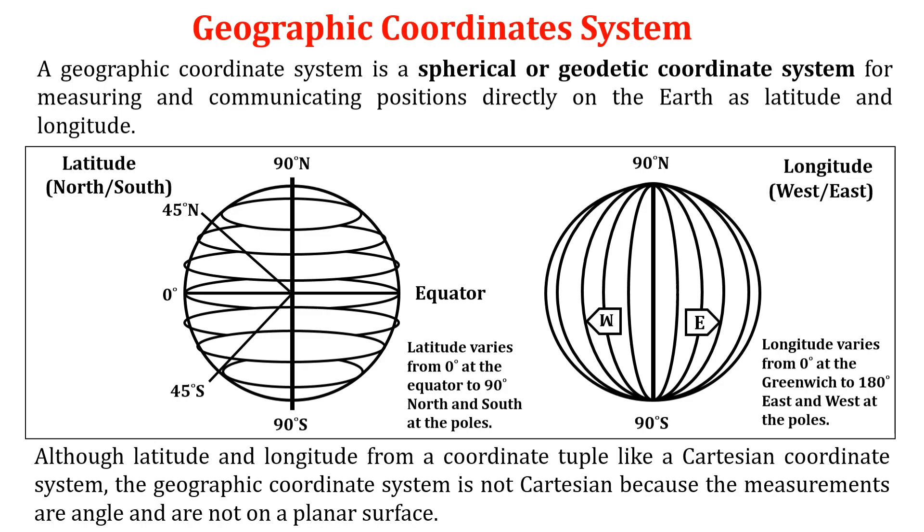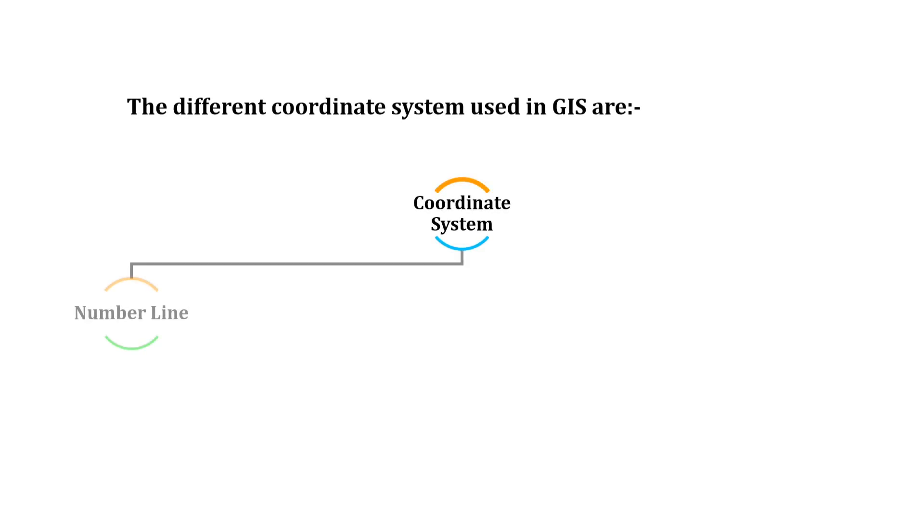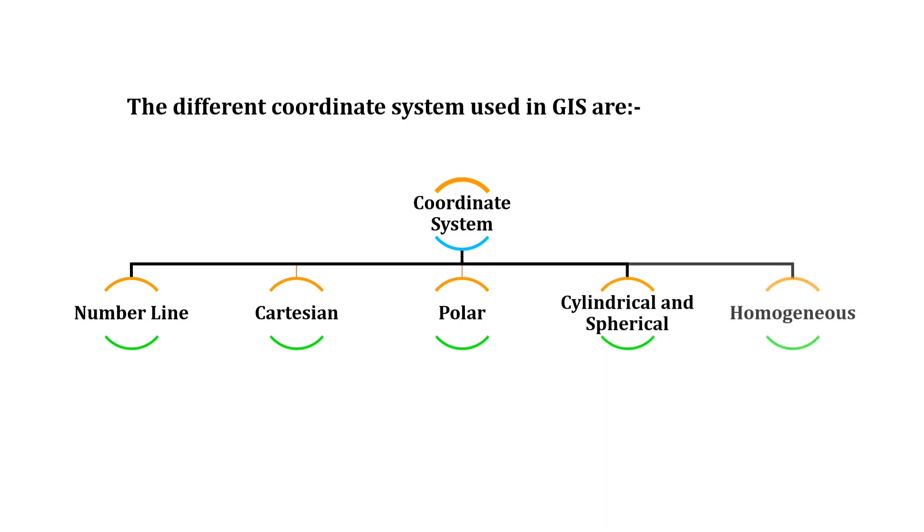The different coordinate systems used in GIS are: number one, number line; number two, Cartesian; number three, polar; number four, cylindrical and spherical; and number five, homogeneous.